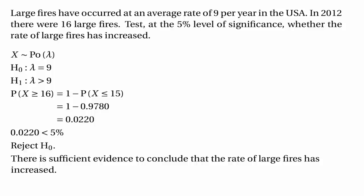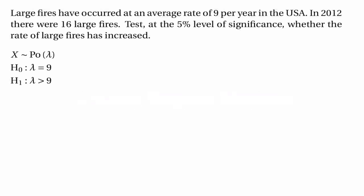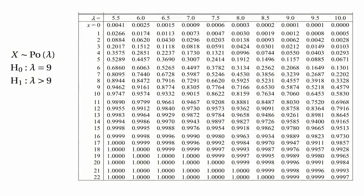That's one way of answering this question, but there's a different method using a critical region — the set of values which would cause us to reject the null hypothesis. Going back to the tables, we scan up the column where lambda equals 9 and stop at the last probability still greater than 0.95. In this case we stop at 0.9585. So the probability of getting 14 or less is 0.9585, and 1 minus 0.9585 is the probability of getting 15 or more. We look at the row just below 0.9585.